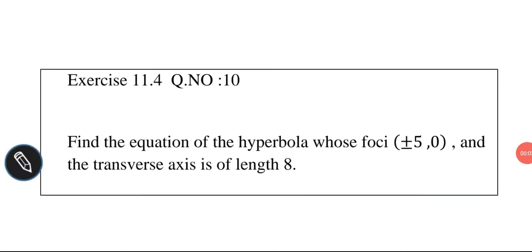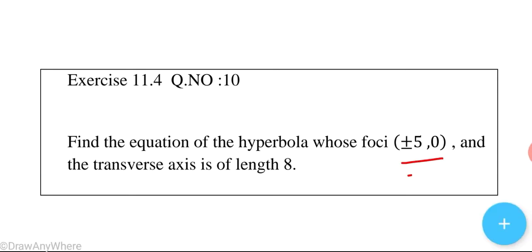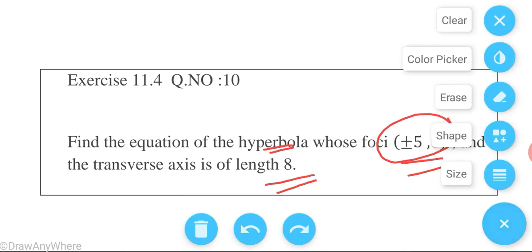Find the equation of the hyperbola whose foci is plus or minus 5 comma 0 and the transverse axis is of length 8.